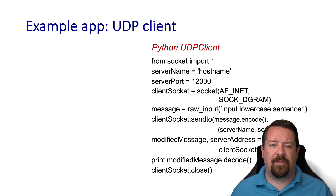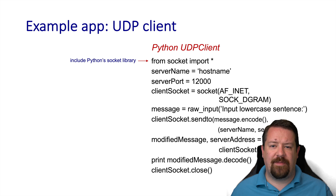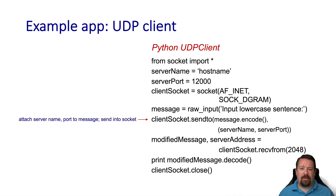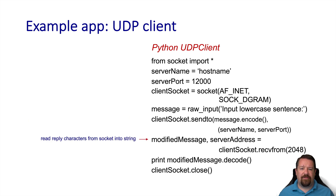Here's how the code looks in Python. Python is a particularly easy language to use for socket programming. First, you'll see that we import the socket module. We specify the name of the server, the port number for the server, the socket type, and a string of ASCII text for the message. We encode that string into UTF-8 and use the send-to call to specify the server's name and port number and send the datagram. We then use the receive-from call on the socket to listen for the reply. When the reply comes back, we decode it and print it to the screen, then close the socket.